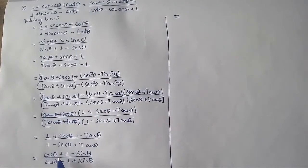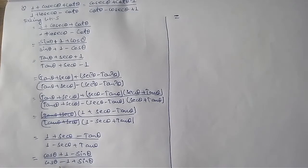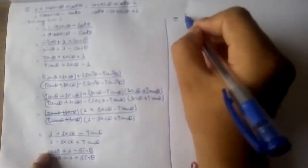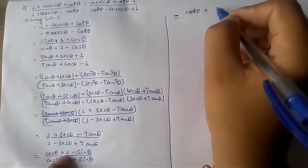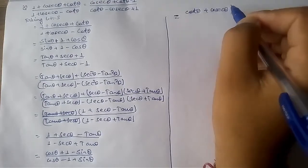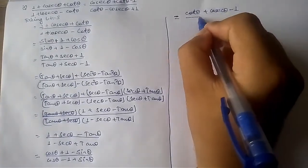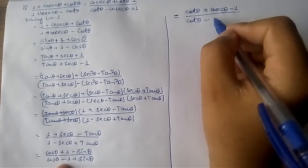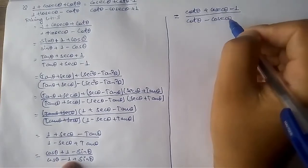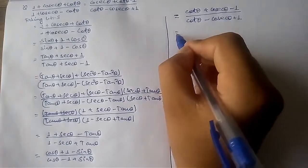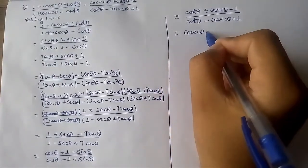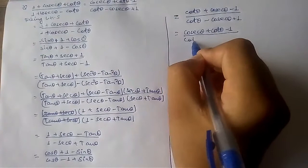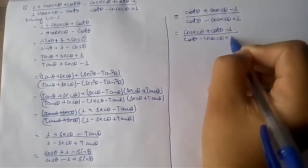After this, to bring the expression into the form with cosec and cot, we divide both numerator and denominator by sine theta. We get cosec theta plus cot theta minus 1 divided by cosec theta minus cot theta plus 1, which equals the right hand side.